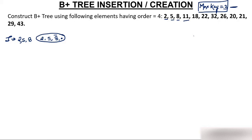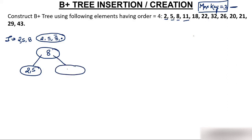If a node contains more than the maximum number of elements, it will split from the middle. I am considering right bias, so in every node I will take the right-leaning middle. The node splits from 8, so 8 comes up. Left of 8 will be 2 and 5, right of 8 will be 11. In B+ tree, left elements are less than the parent key and right elements are greater than or equal to it. Also in B+ tree, all data are at leaf nodes. So 2, 5, 8, and 11 are all at leaf, and these leaf nodes are connected with linked list pointers. So on inserting 11, I have got this tree.